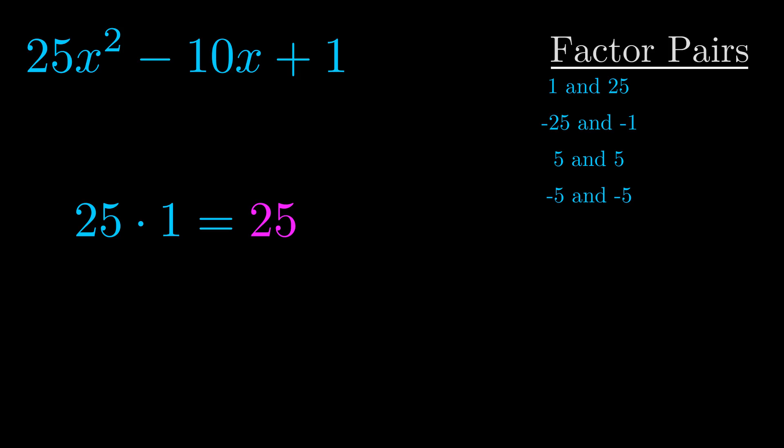The b value is the coefficient on the x term. That's the middle term, the one that we haven't done anything with yet. And really this is the only factor pair that we need.